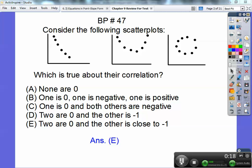Consider the following scatterplots. So we've got those three scatterplots right there. Which is true about the correlation? None are zero. Well, clearly, this guy is zero, and this guy is zero, because I can't really get a correlation line, a regression line that fits that data. I mean, it would go like this on this one, and same on this one.